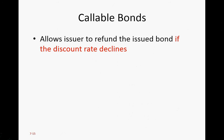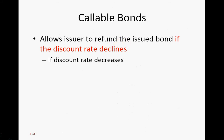The same idea applies for the borrower, which is a company. If the interest rate is going down, they want to refinance. They want to call back or purchase back the bond they have already issued — paying back the money they have already borrowed — and then borrow again at a lower rate. So they recall the bond, they call back the bonds, and if the bond is called back, it must be because the discount rate or interest rate has declined.